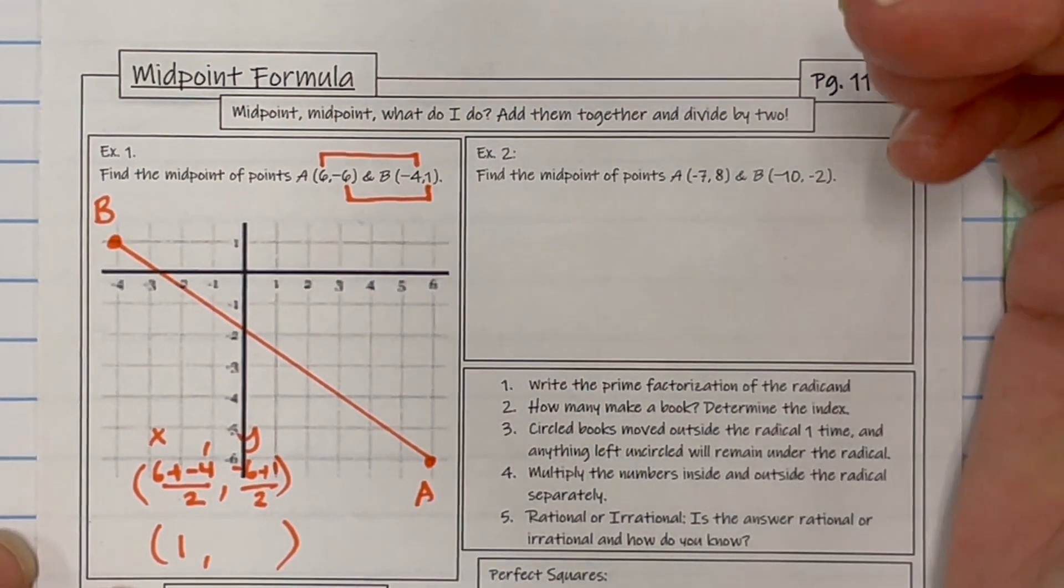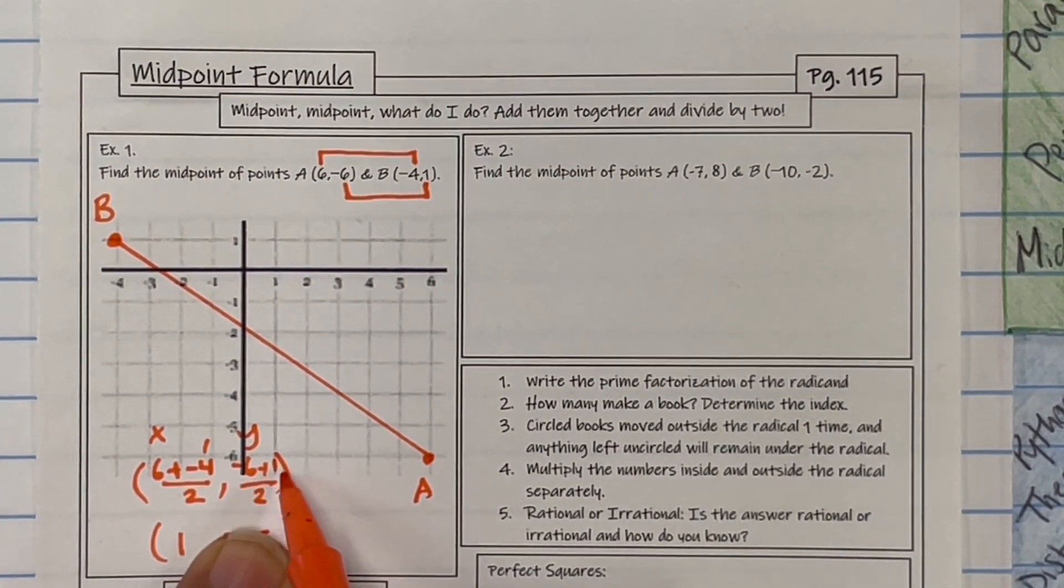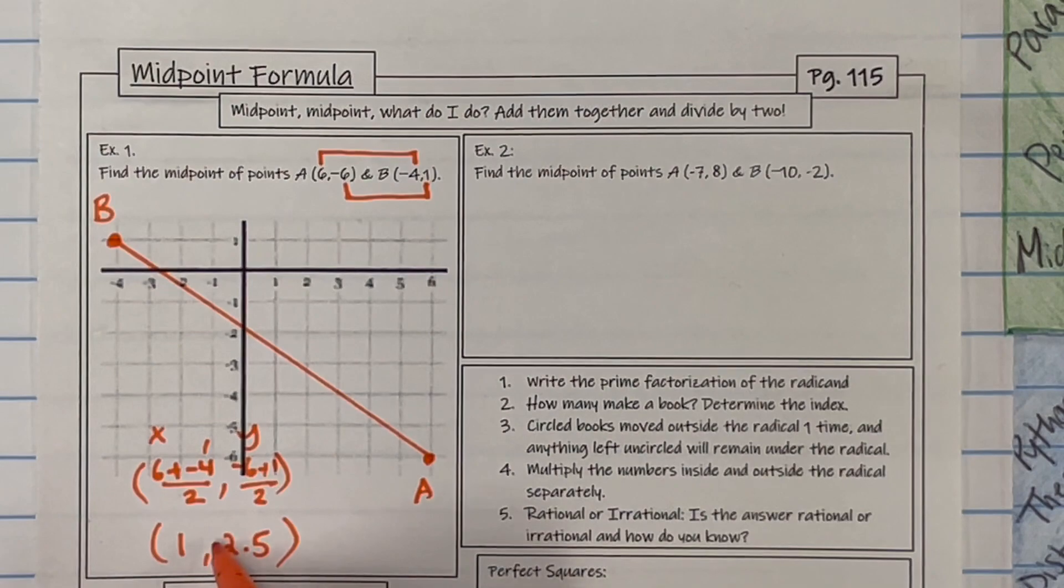Oh, it's just a weird point. Okay, it's okay to get decimals. All right, so negative 6 plus 1 is negative 5, divided by 2 is negative 2.5.